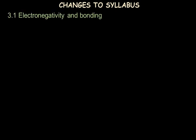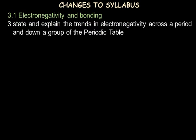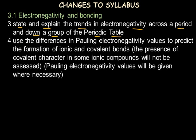The first change is made in the topic of electronegativity and bonding, where one subtopic says to state and explain the trends in electronegativity across a period and down a group of the periodic table. Another subtopic is to use the differences in Pauling's electronegativity values to predict the formation of ionic and covalent bonds. The presence of covalent character in some ionic compounds will not be assessed here.